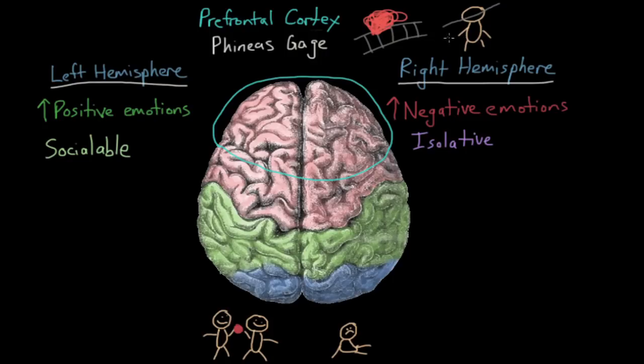So that's the cerebral cortex. If you ever wonder what makes a human human, well, a lot of it is actually right behind your forehead — in the area known as the prefrontal cortex.